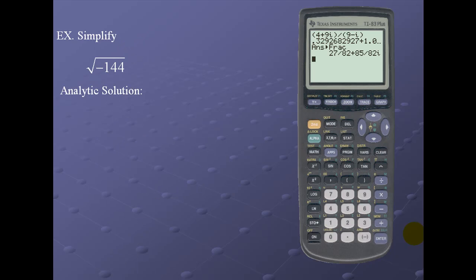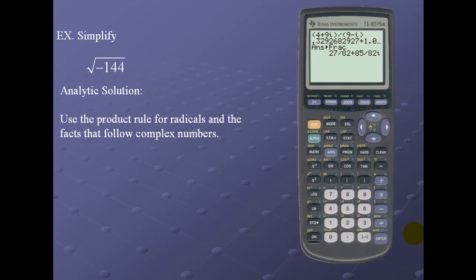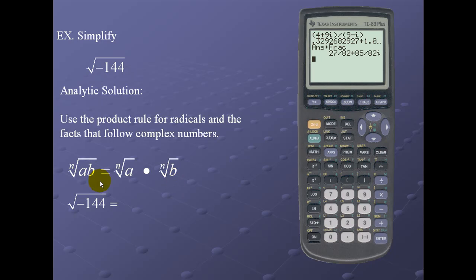Let's simplify the square root of -144. We will use the product rule for radicals and the facts that follow complex numbers. The product rule states that the nth root of (a × b) equals the nth root of a times the nth root of b. Applying that to √(-144), we get √(-1) times √144. Using our facts from complex numbers, our result is 12i.